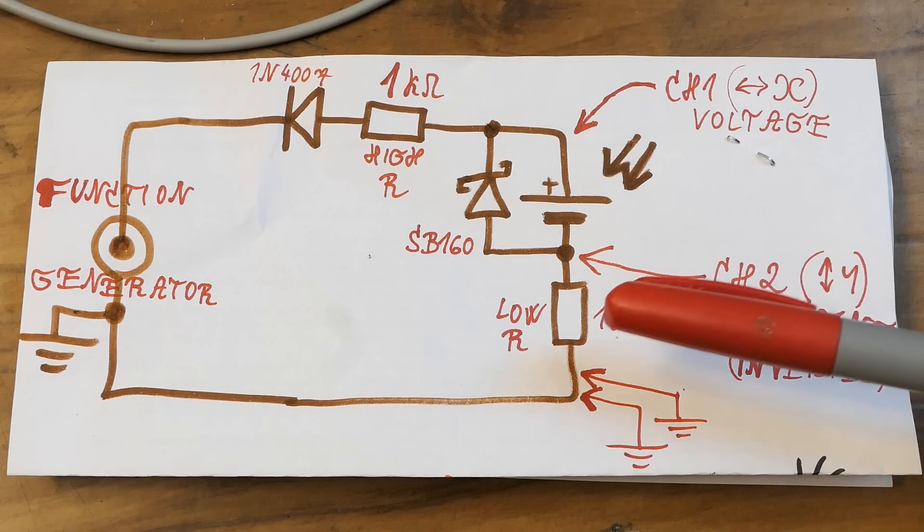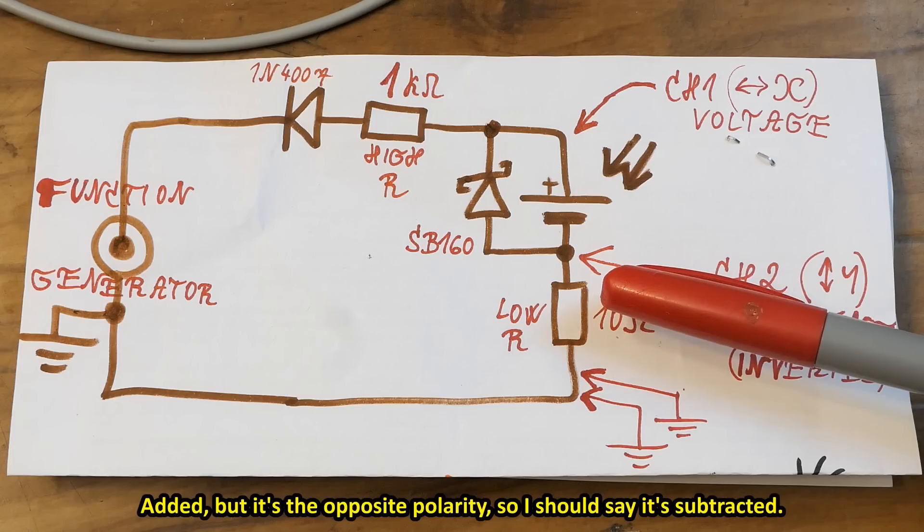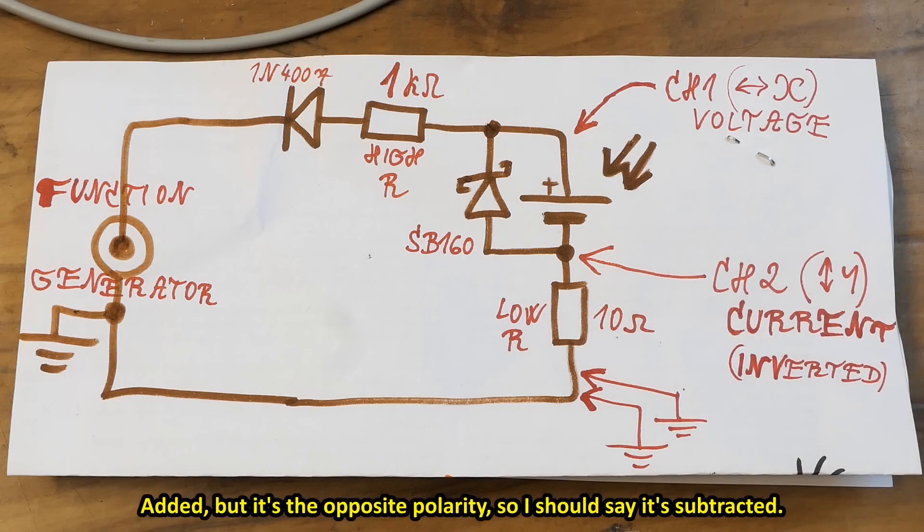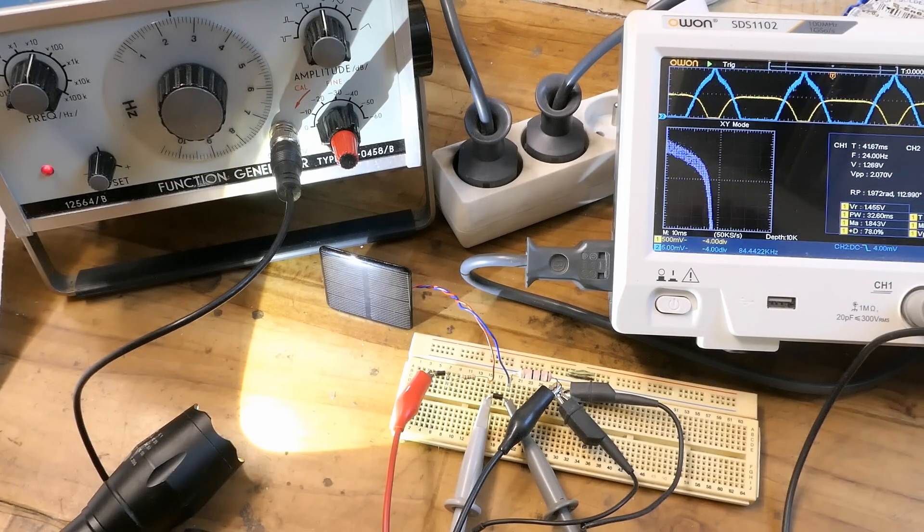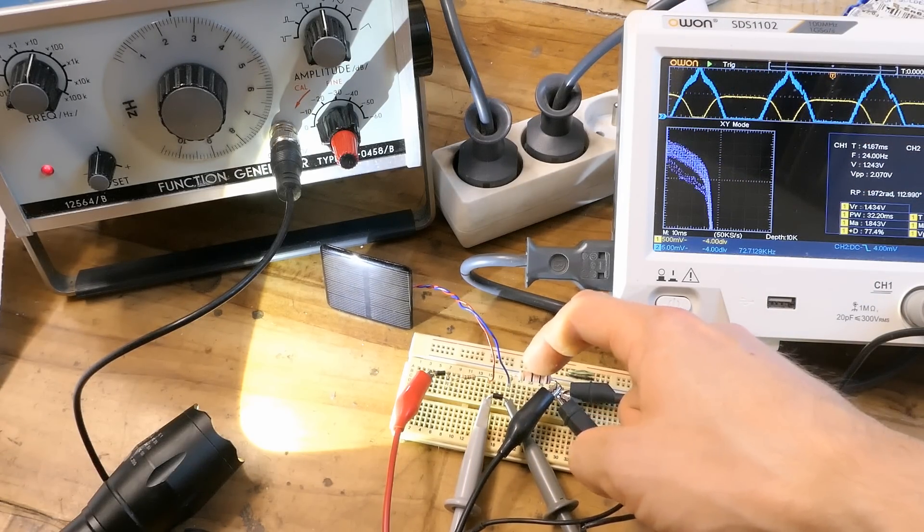The only thing is the voltage drop on the current sensing resistor has to be very low, negligible in comparison to the voltage, because it's being added to the voltage. Now not defeating any ground, but the noise shows up a lot here. The current sensing resistor voltage is quite low.